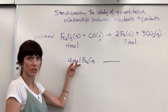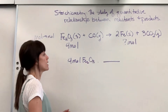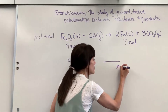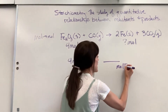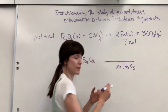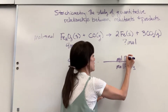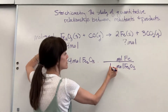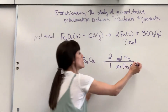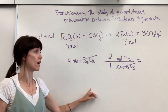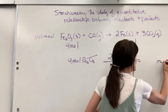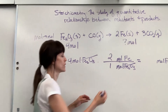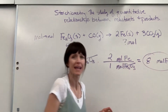We're going to get rid of the moles of iron oxide and end with moles of iron. The units will guide you. Put moles of iron three oxide in the denominator so they cancel, and put moles of iron on top. Then attach the numbers from the coefficients: one mole of iron three oxide produces two moles of iron. Moles of iron three oxide cancel out, leaving moles of iron. Four times two divided by one gives us eight moles of iron.